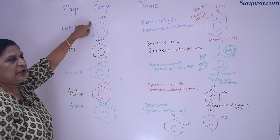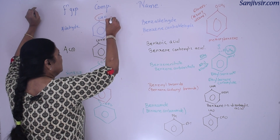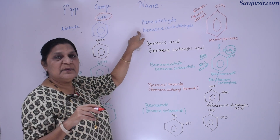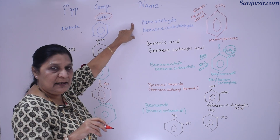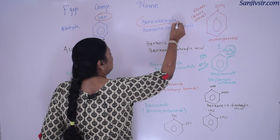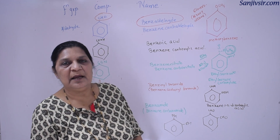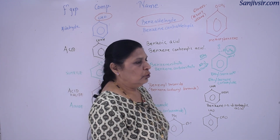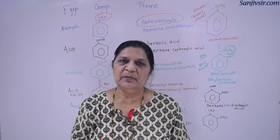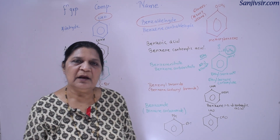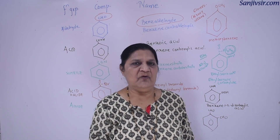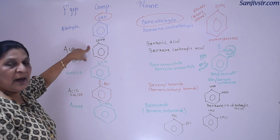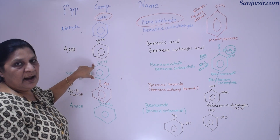Looking at this benzene molecule, the CHO group attached to it is called the aldehyde group. According to IUPAC, it would end with 'al', but IUPAC has also accepted the name benzaldehyde for this compound. One important thing to note: terminal functional groups are those which always appear at the end of the chain — for example, the aldehyde group and the carboxylic acid group always appear at the end.